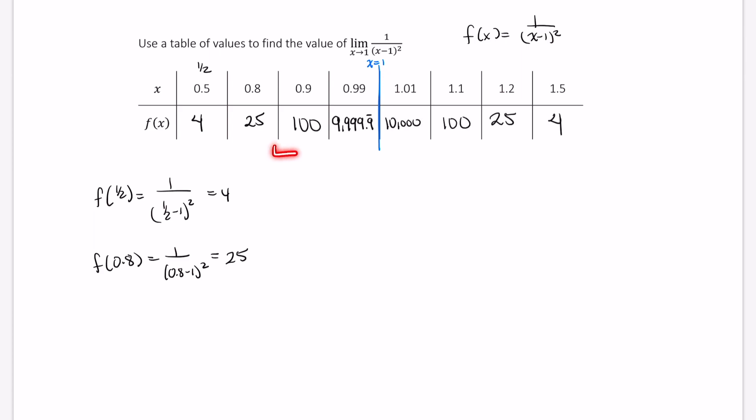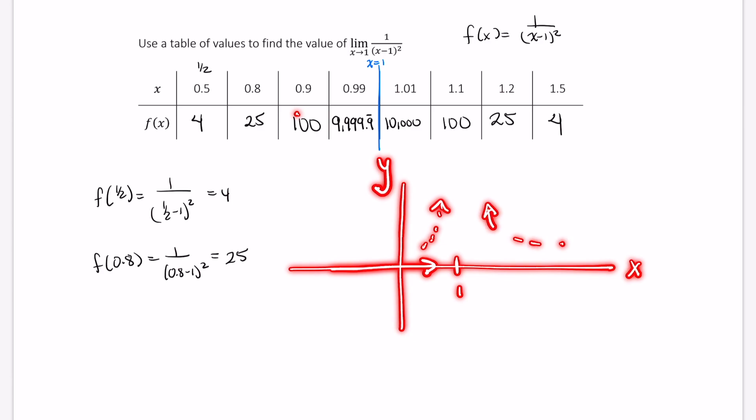All right, so these are the values you should have filled in independently. And as you can see, as the x values get closer to 1, so if we're looking at this, here's 1, my x-axis and my y-axis. As we travel along in this direction, it looks like the y values keep getting bigger and bigger on both sides.